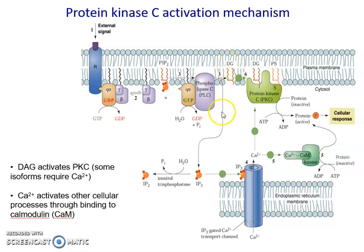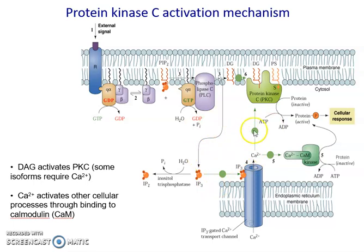And we have the release of IP3, which then diffuses into the cytosol, where it will act on the sarcoplasmic reticulum channels known as IP3-gated calcium channels. This will allow for the efflux of calcium, which will increase the intracellular calcium concentration. This will then bind to calmodulin, forming our calcium-calmodulin complex, which will activate myosin light chain kinase, which will phosphorylate our myosin light chain and ultimately results in smooth muscle contraction.